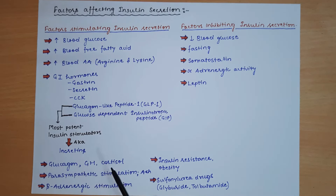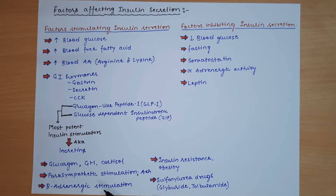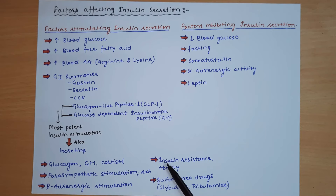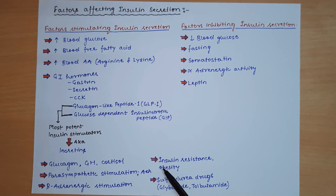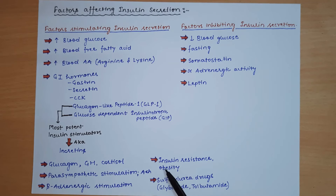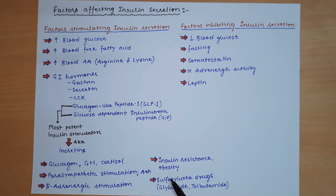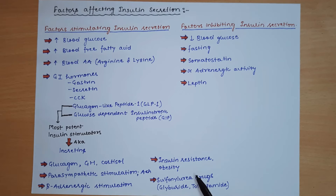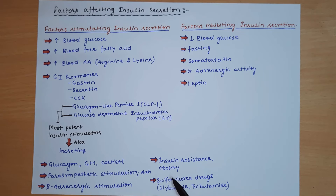Other factors stimulating insulin secretion include: glucagon, growth hormone, and cortisol; parasympathetic stimulation via acetylcholine release; beta-adrenergic stimulation; insulin resistance (which causes more insulin to be secreted as the body compensates for reduced effect); obesity; and sulfonylurea drugs such as glyburide and tolbutamide, which block potassium channels causing increased calcium influx and greater insulin secretion.